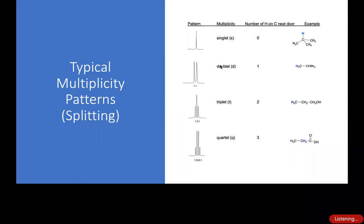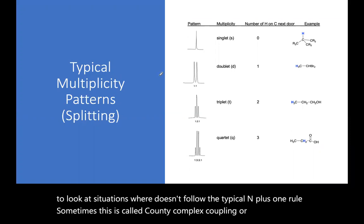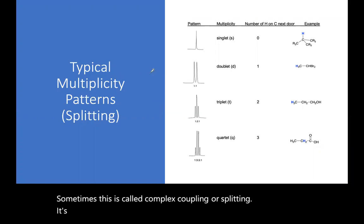Hello, we're going to look at some multiplicity today and look at situations where it doesn't follow the typical n plus one rule. Sometimes this is called complex coupling or splitting. It's not that complex, it's just a little more than the n plus one.